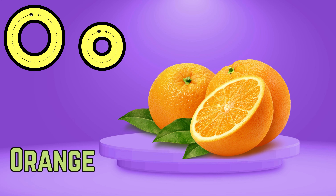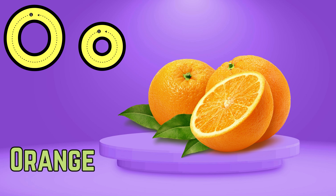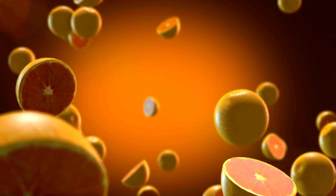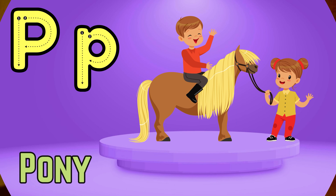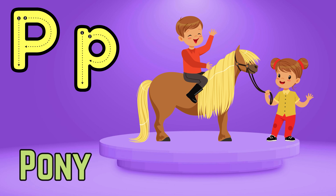M is for monkey, monkey, monkey. This is the monkey, monkey, monkey. N is for needle, needle, needle. This is the needle, needle, needle. O is for orange, orange, orange. This is an orange, orange, orange.